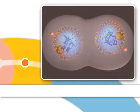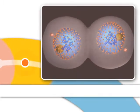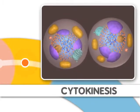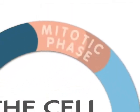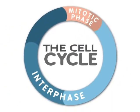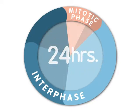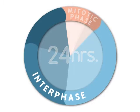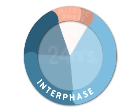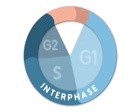After mitosis, two new cells are formed by a process called cytokinesis. Mitosis is only one part of what is called the cell cycle. For many eukaryotic cells, a cell is duplicated every 24 hours. Most of the life of a cell is spent in interphase. Interphase consists of three stages called G1, S, and G2.